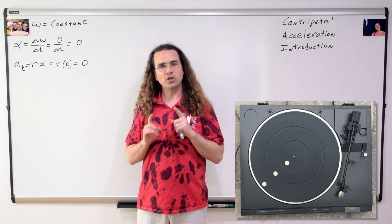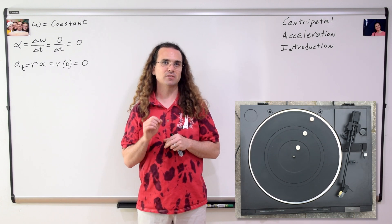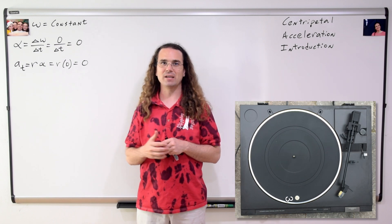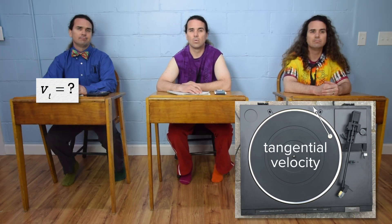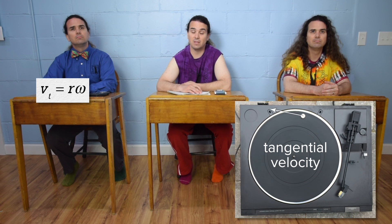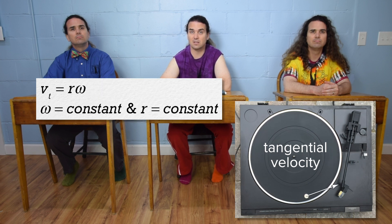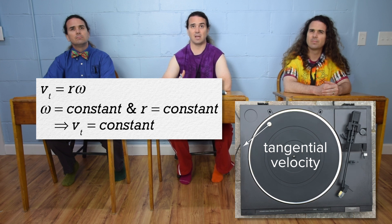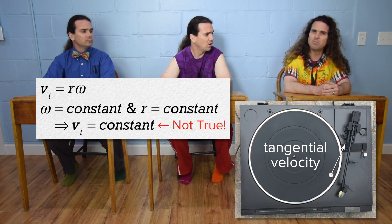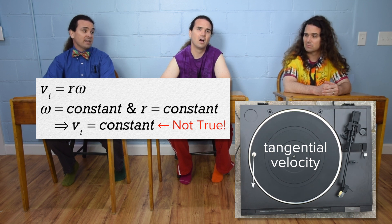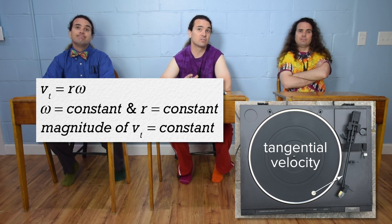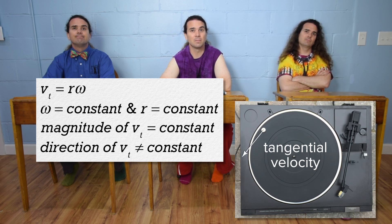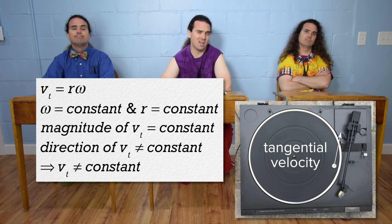Now let's adjust our focus slightly and just look at mint number three, the one with the largest path radius. Bobby, what do we know about the tangential velocity of mint number three? We know tangential velocity equals radius times angular velocity. So if the angular velocity is constant and the radius is constant, then the tangential velocity must also be constant. Actually, no. Remember, velocity is a vector, so it has both magnitude and direction. The magnitude of the tangential velocity is constant; however, the direction of the tangential velocity is changing. Therefore, the tangential velocity is not constant.